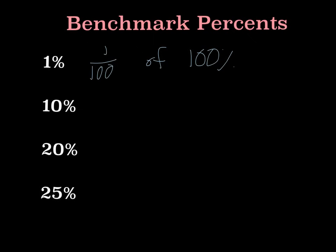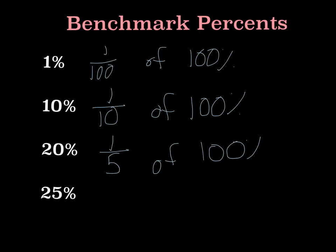Next we have 10%. We should know that 10 ten percents equals a hundred percent, so that means 10% is one tenth of a hundred percent. Twenty percent: there are five twenty percents in a hundred percent, so that means that is one-fifth of a hundred percent. And then twenty-five percent: there are four twenty-five percent in a hundred percent, so that means twenty-five percent is one-fourth of a hundred percent.